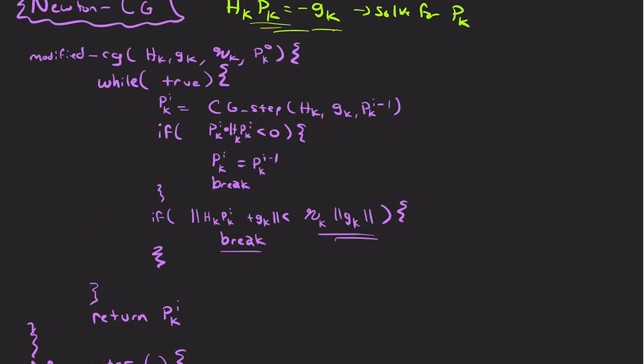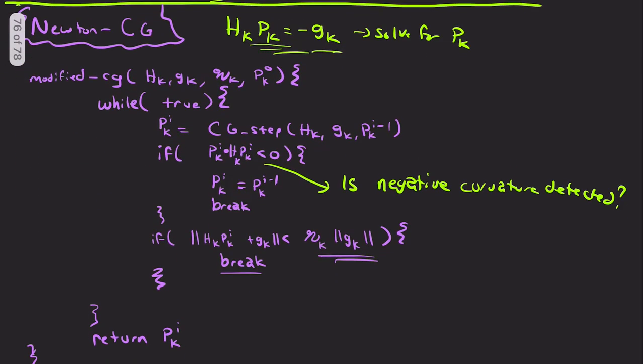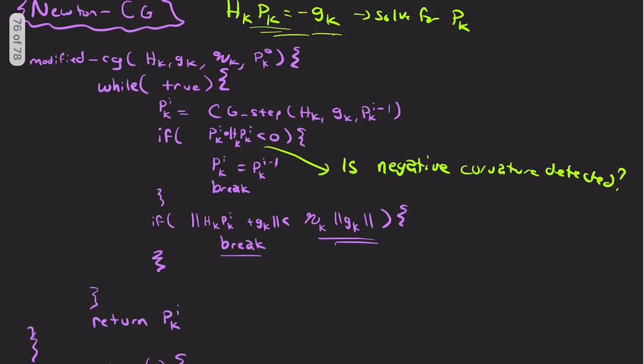So this first termination condition here says, is negative curvature detected? And negative curvature we don't want because we want a local minimum. So if we're detecting negative curvature, either our quadratic is not a good approximation to the function, or we're not in a basin of attraction of a minimum anyway. So once we detect negative curvature, because remember this algorithm is on positive definite matrices, so this is actually computed in the algorithm anyways. So if it's detected, use the previous iteration and quit, because now we're fitting things we don't want.